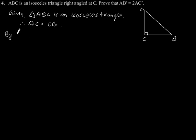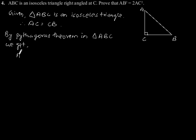By Pythagorean theorem in triangle ABC, right angled at C, we get AC squared plus CB squared equals AB squared.